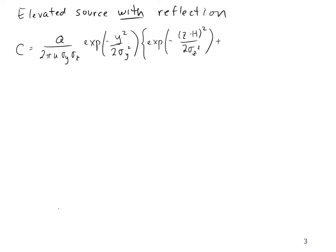That's the term above the ground. And now we're going to add the term below the ground, which looks the same, but it's the exponential of minus (z plus h) squared divided by 2 sigma z squared.